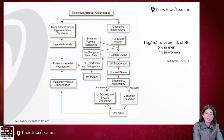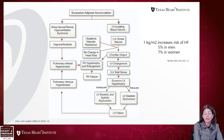Excess adipose tissue causes sleep apnea, hypoventilation, hypoxia, pulmonary arterial hypertension, pulmonary venous hypertension, leading to RV hypertrophy, RV enlargement, and eventually cor pulmonale or RV failure. In obese subjects, circulating blood volume is increased, systemic vascular resistance secondarily increases, leading to increased pressures and increased wall stress in the heart, which leads to eccentric LV hypertrophy.